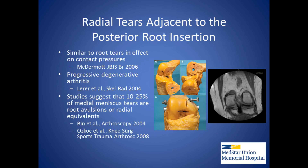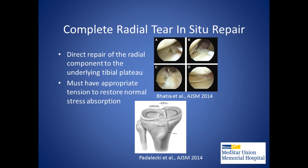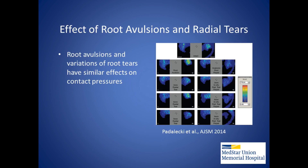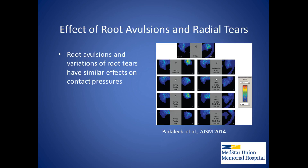Radial tears adjacent to the posterior root insertion have a similar effect on contact pressures when compared to root tears. Progressive degenerative arthritis has been described, and studies suggest that up to one in four medial meniscal tears are root avulsions or radial root equivalent tears. In situ repair of complete radial tears is performed by restoring the integrity between the terminal end of the meniscus and the underlying tibial plateau, with an appropriate amount of tension necessary to restore normal stress absorption. In situ repair has been shown to restore the ability of the meniscus to absorb hoop stress.